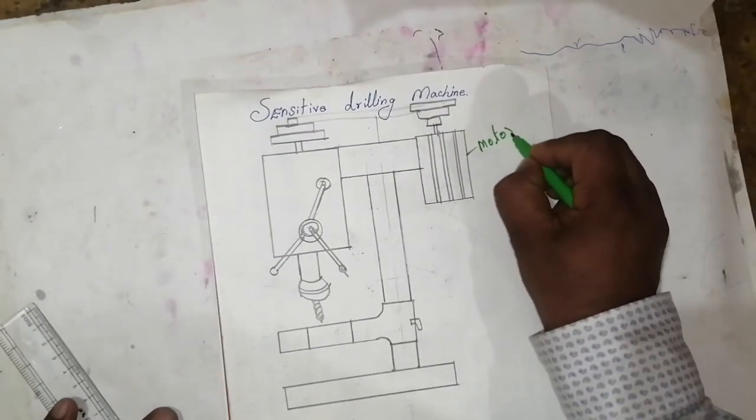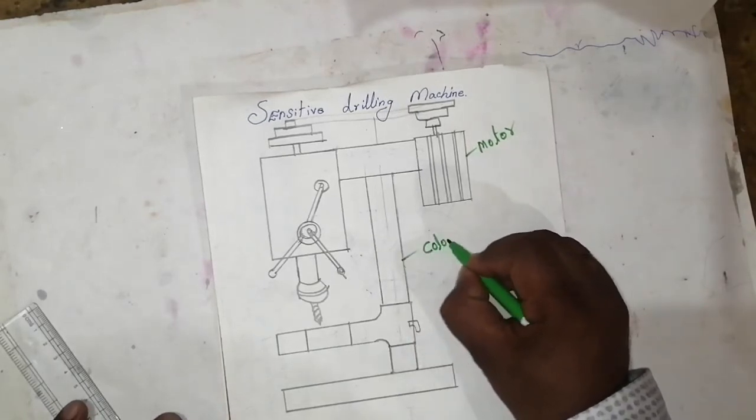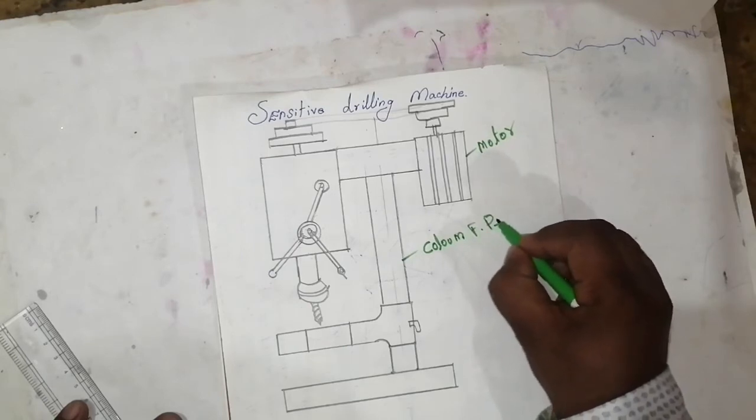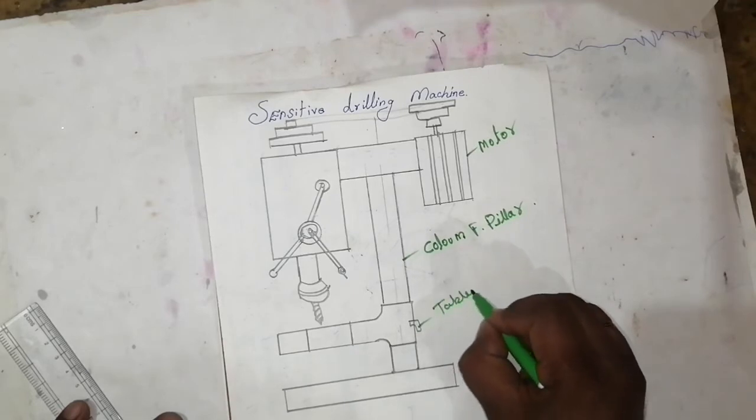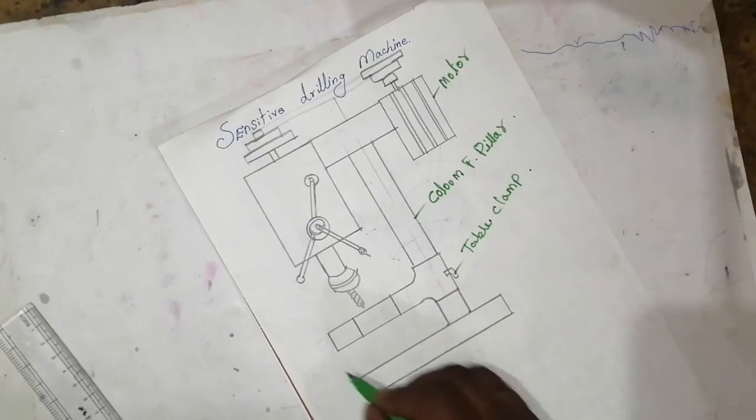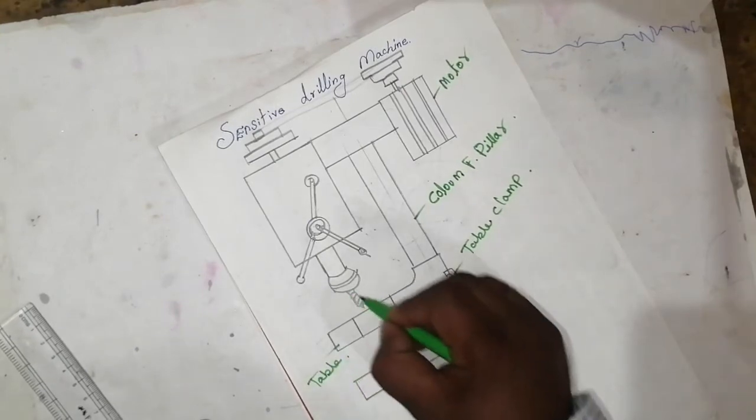Okay friends, I will show how to name the parts. This is a motor, this one is column or pillar, this is a table clamp, this is a table, this is a drill.